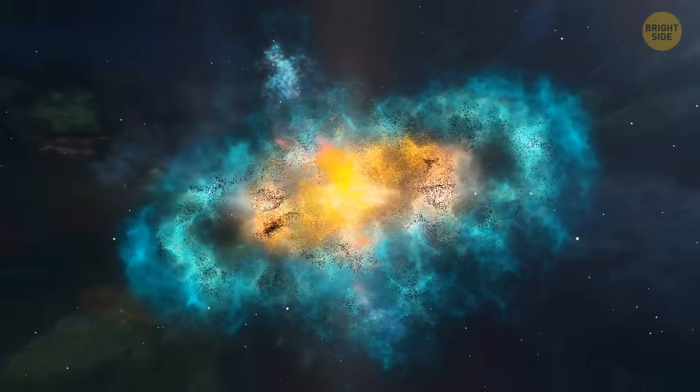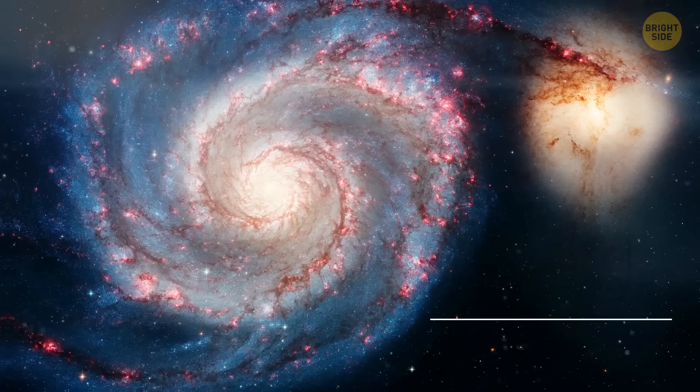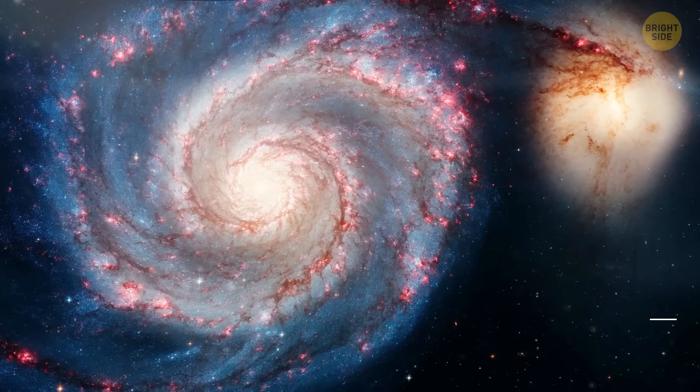Galaxies are arranged in huge walls and filaments, with enormous gaps in between. And these gaps are voids, also known as dark space.